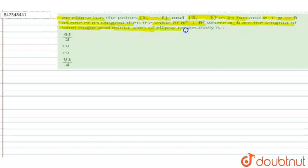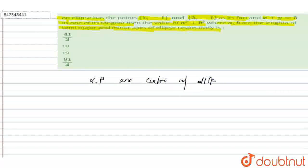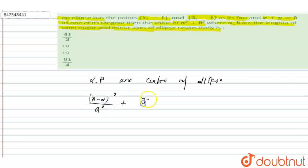The semi-major and minor axes of the ellipse are a and b respectively. Let us consider alpha and beta as the center of the ellipse. Then, the equation of the ellipse can be written as: (x − α)² / a² + (y − β)² / b² = 1.